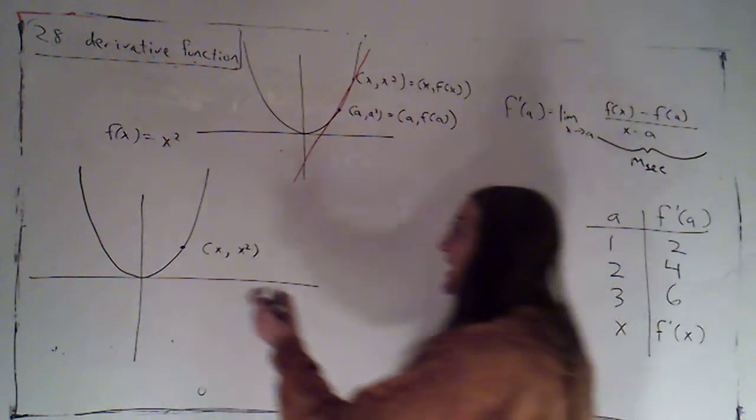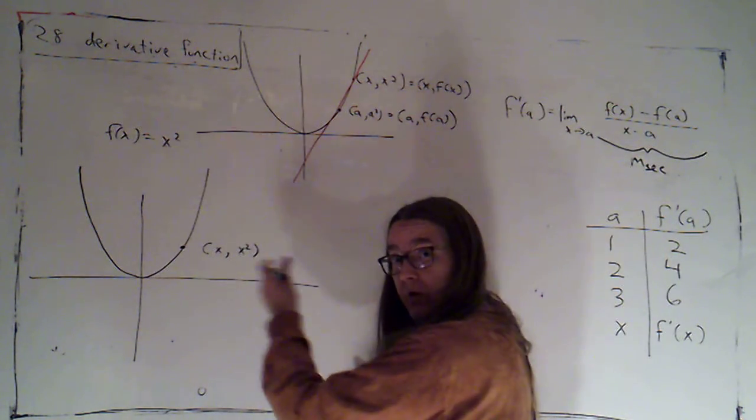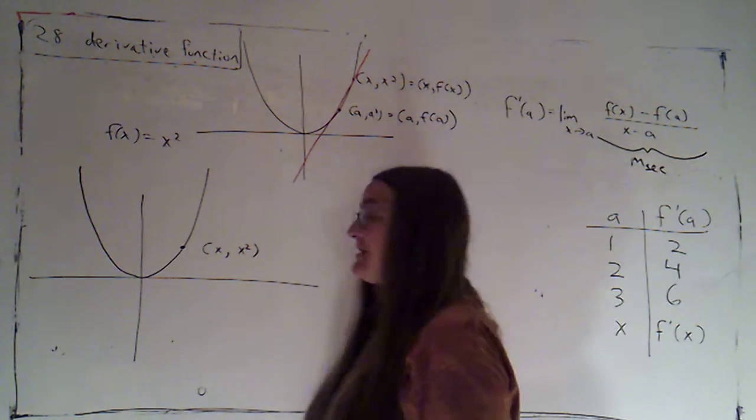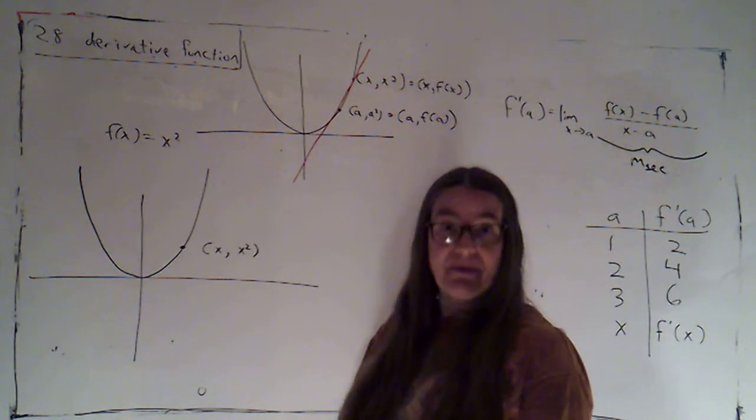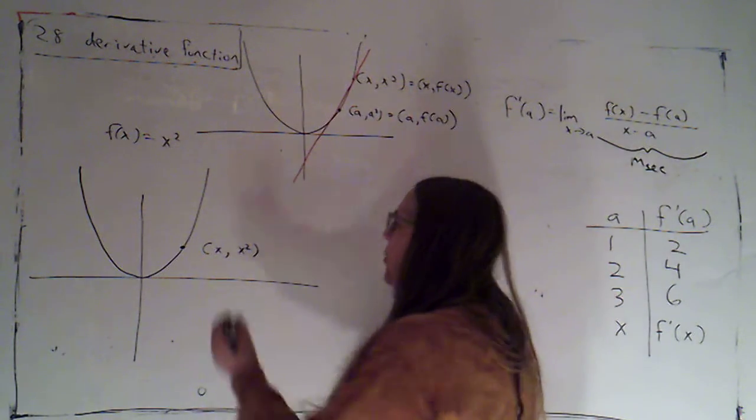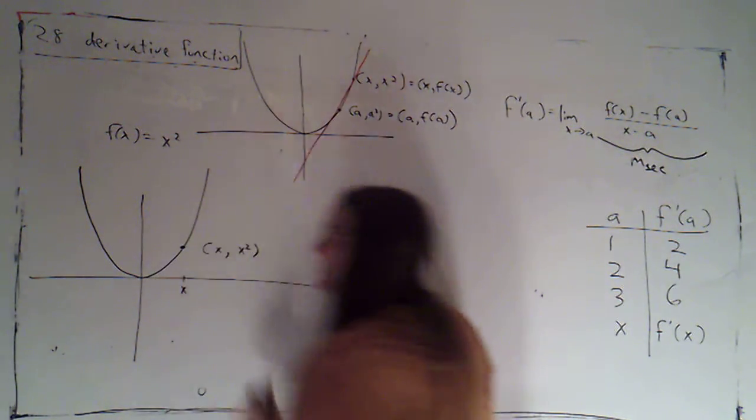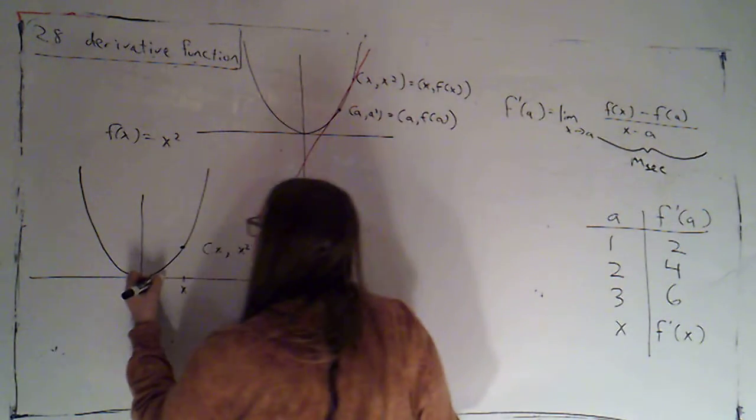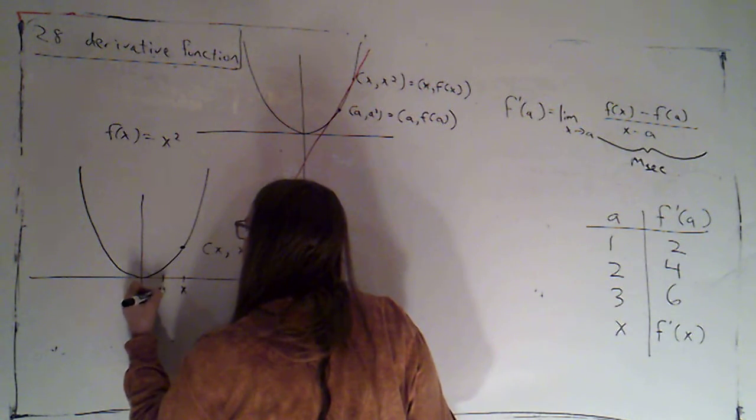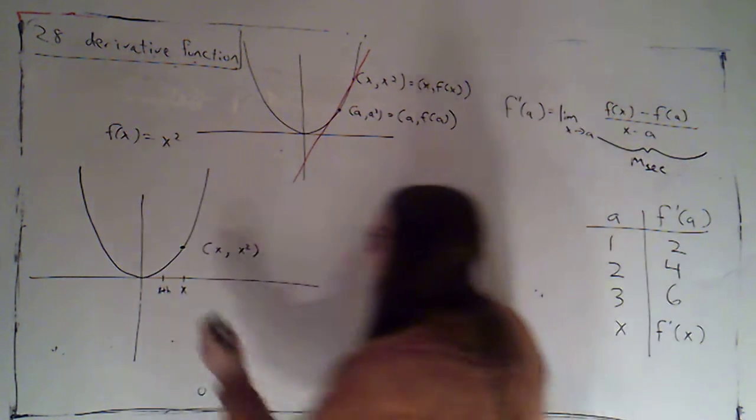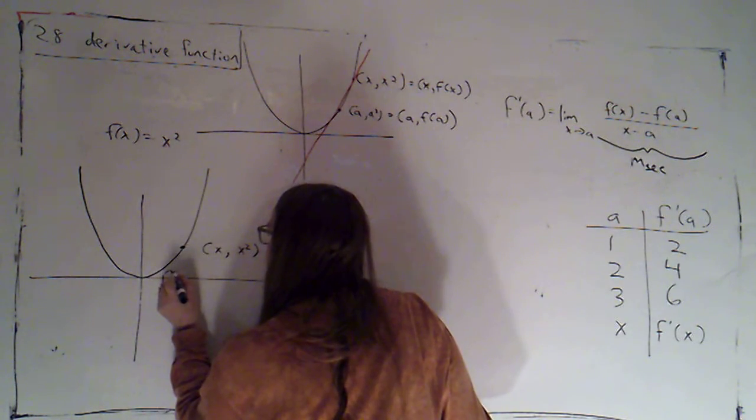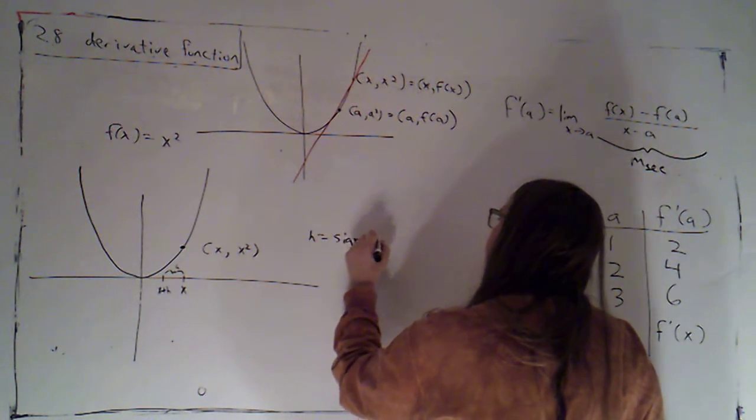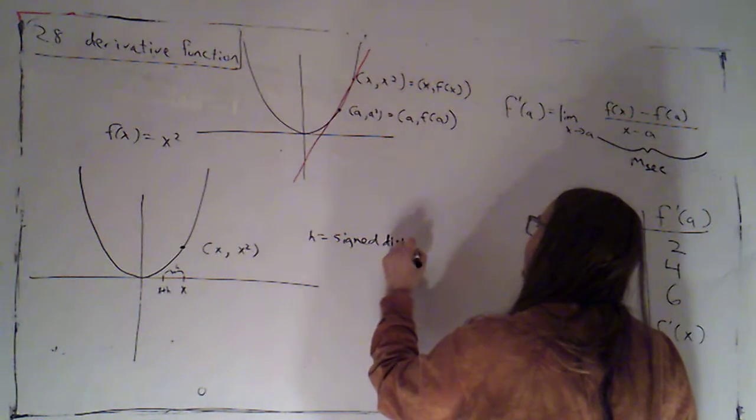But now I've named my first point x, x squared. Here that was what I labeled my second point. So I can't, when I go to find a nearby point, I can't call it x, x squared. I have to call it something else. What I'm going to do, this is x right here. I'm going to call my nearby point x plus h.